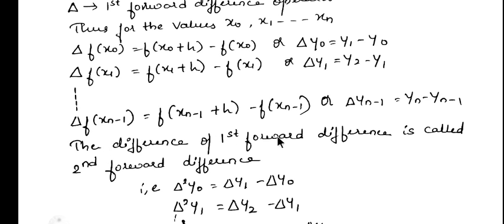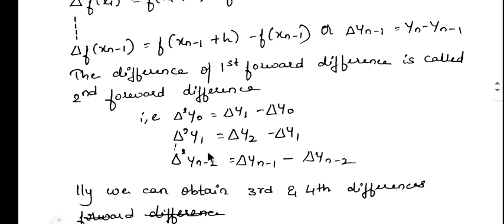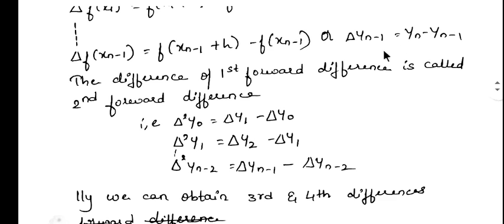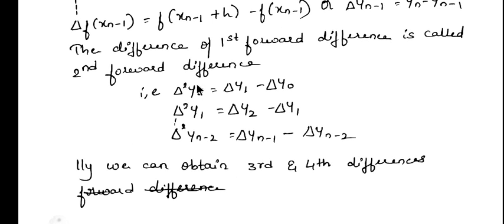The difference of the first forward difference is called the second forward difference. Delta is indicating first forward difference. The second forward difference is delta² y0 = delta y1 - delta y0, and delta² y1 = delta y2 - delta y1, and so on. This is the second forward difference.